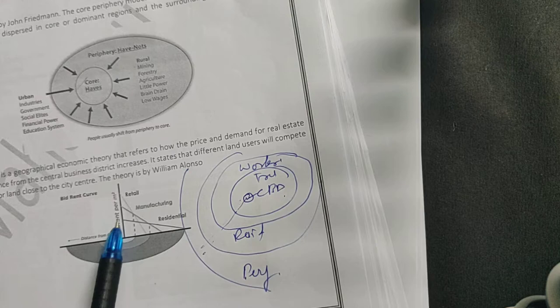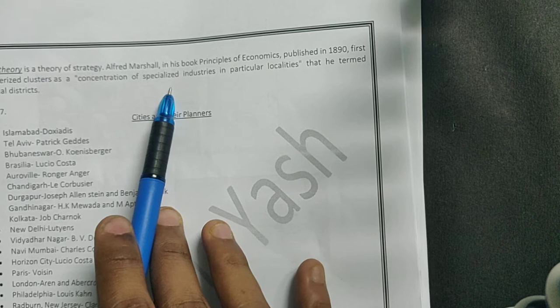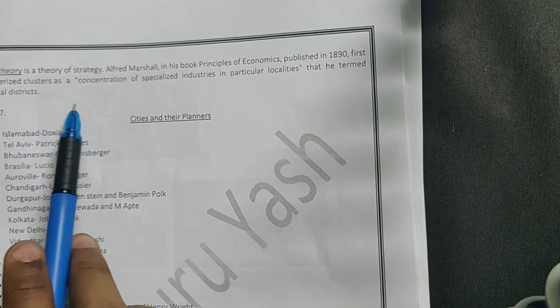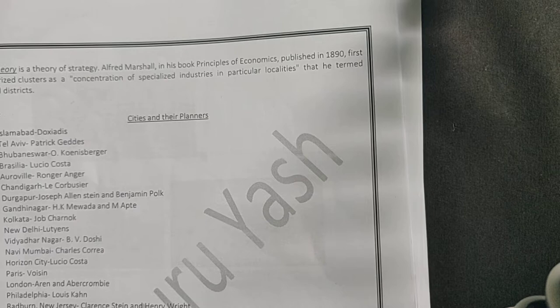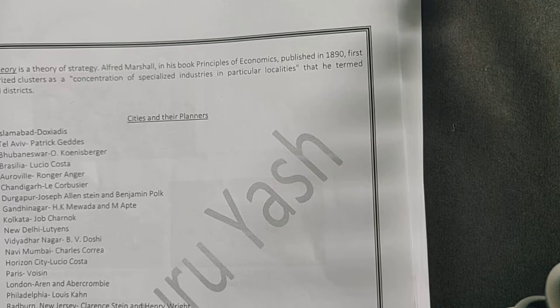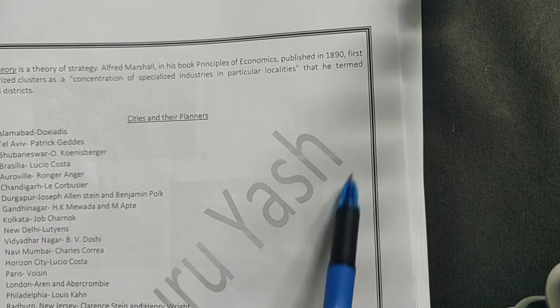What this bid rent theory says is as you move outwards from the central business district toward your residential areas, your rent starts decreasing. The last is cluster theory. The cluster theory is a theory of strategy by Alfred Marshall in his book Principles of Economics, which categorizes clusters as a concentration of specialized industries in particular localities, also known as industrial districts. You have a city with different small clusters, and these clusters have some industrial output. Obviously you have industries set outside your city core area on the peripheral region, so there will be a small region or cluster of space which forms an industrial district outside the city.